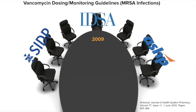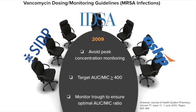The first vancomycin dosing and monitoring guidelines came out in 2009, where three organizations got together, reviewed relevant research data, and came up with important recommendations. They recommended to avoid peak concentration monitoring, since at the time many clinicians were monitoring both peak and trough. They also recommended targeting an AUC-MIC ratio of 400 or higher, and noted that the trough alone could be used as a surrogate to ensure you were hitting that target.